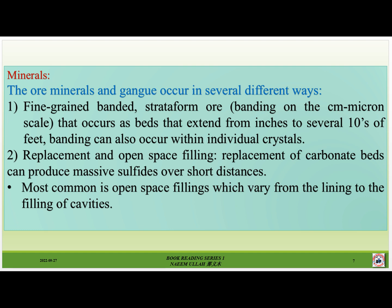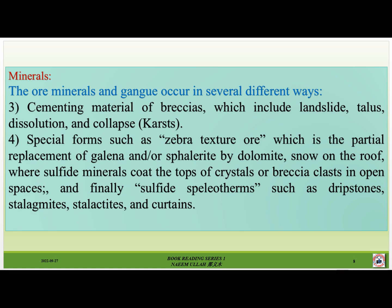Most common is open space filling, which varies from the lining to the complete filling of cavities. Third, cementing material in breccias, which include landslide, telus, dissolution, and collapse breccias. Fourth, special forms such as zebra texture — the partial replacement of galena and/or sphalerite by dolomite — snow-on-the-roof, where sulfide minerals coat the tops of crystals or breccia clasts in open spaces, and finally sulfide speleothems such as tripstone, stalagmites, stalactites, and pertites.